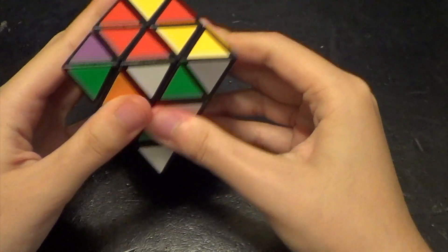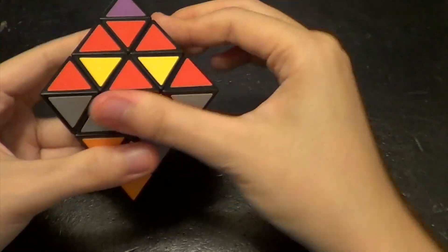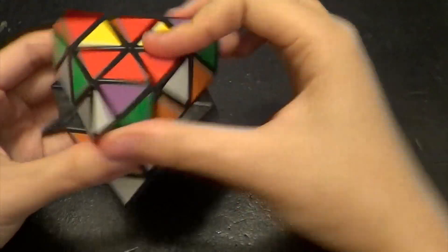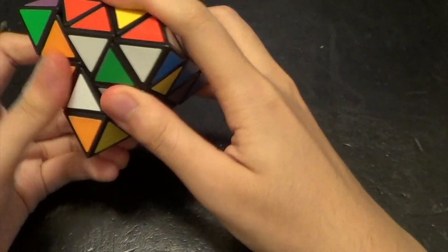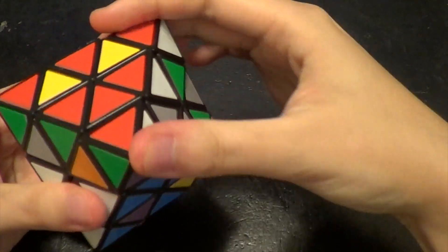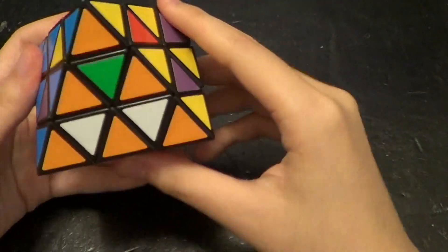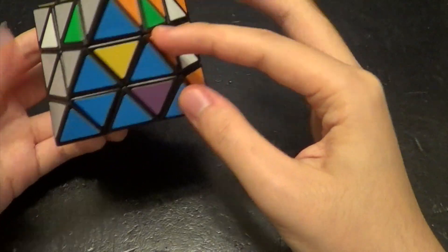R', U, L', U', L, U', R, U. So now all of the vertices are in the correct place, and also in the correct orientation.